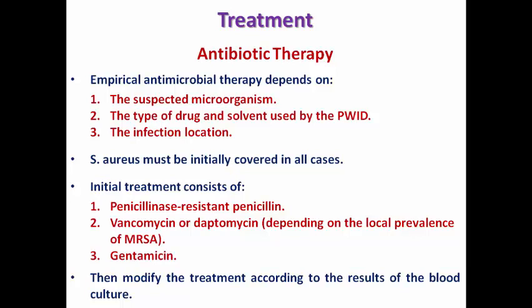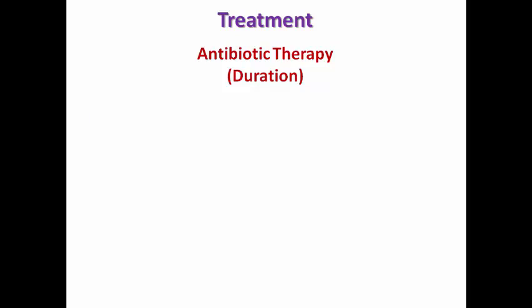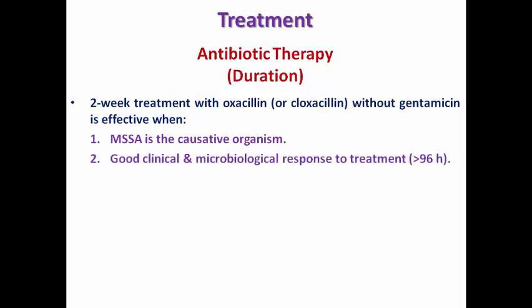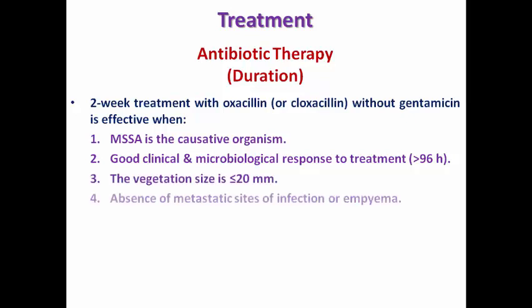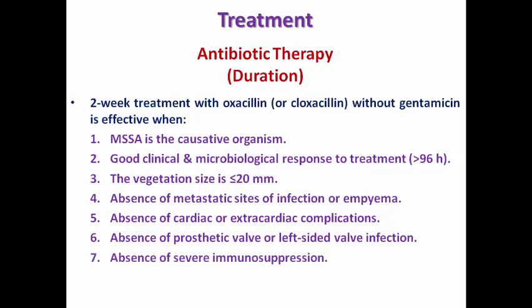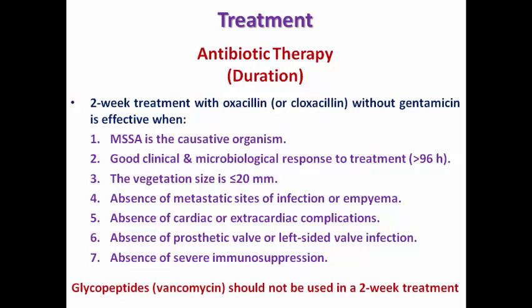Modify treatment according to blood culture results. In some patients, a two-week course with oxacillin or cloxacillin without gentamicin or vancomycin may be sufficient, provided all these conditions are met: methicillin-sensitive Staph aureus as the causative organism, good clinical and microbiological response after four days, vegetation size less than 20 mm, absence of metastatic infection in the lung or empyema, absence of cardiac or extracardiac complications, absence of a prosthetic valve, absence of left-sided valve infection, and absence of severe immunosuppression.